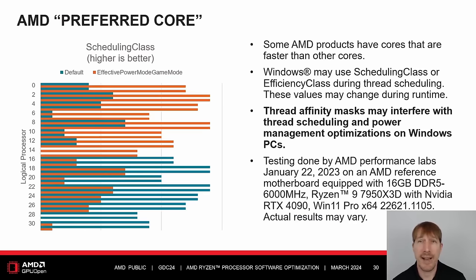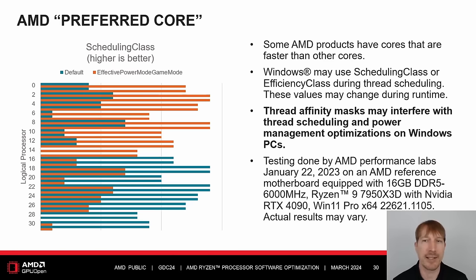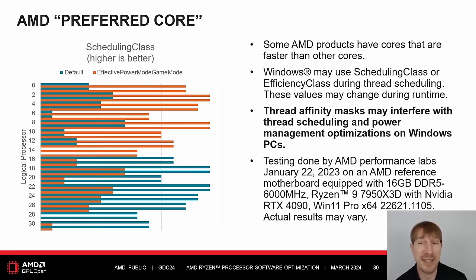Some AMD products have cores that are faster than other cores. AMD calls this feature Preferred Core. The system BIOS may describe the ACPI CPPC highest performance ranking for each logical processor. These values are the basis for the GetSystemCPUSetInformation function's scheduling class values in Windows 10 and later for some AMD products. Windows may use scheduling class during thread scheduling. Note that logical processor 0 may not be the fastest core, and CCD0 may not contain the fastest core. Thread affinity masks may interfere with thread scheduling and power management. I typically recommend not setting process affinity or thread affinity masks in PC applications.